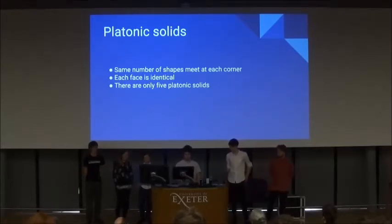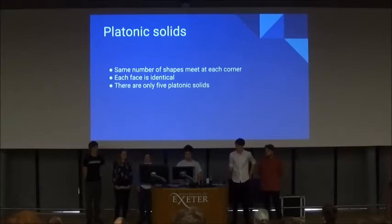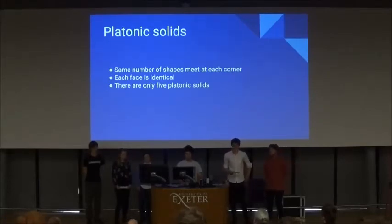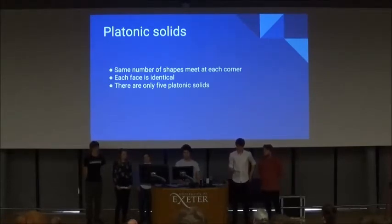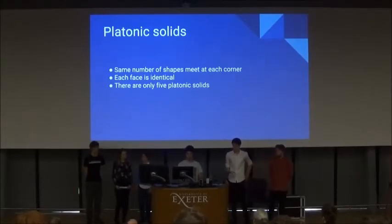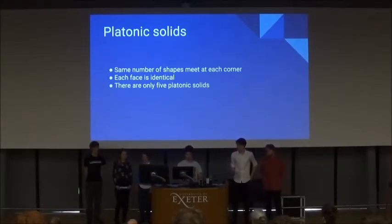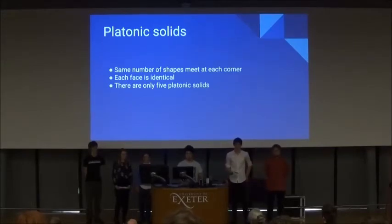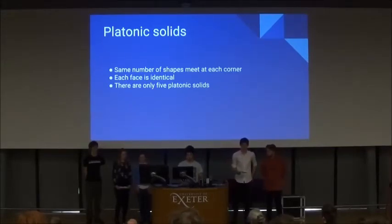There can only ever be 5 platonic solids, because the interior angles around points have to add up to less than 360, or else you've got a flat edge, which is not good. You can have 3 triangles, 4 triangles, 5 triangles, 3 squares, or 3 pentagons.